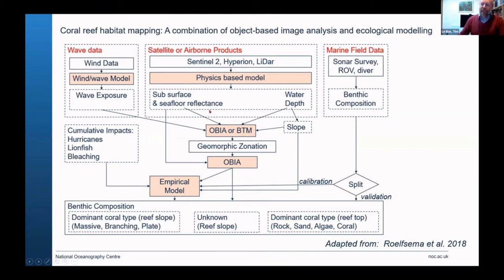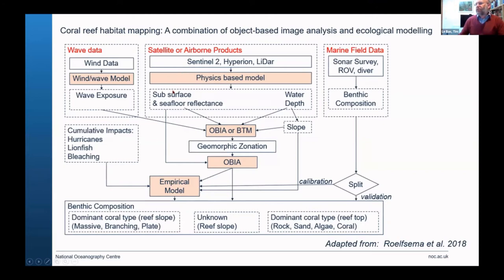We covered a few methods such as object-based image analysis or the benthic terrain modeller to get geomorphic zonation. Once you've got that, you can start building an empirical model. It is quite a complex thing putting all this data together, but what I'm going to show you today is how satellite-derived bathymetry can be part of that process.